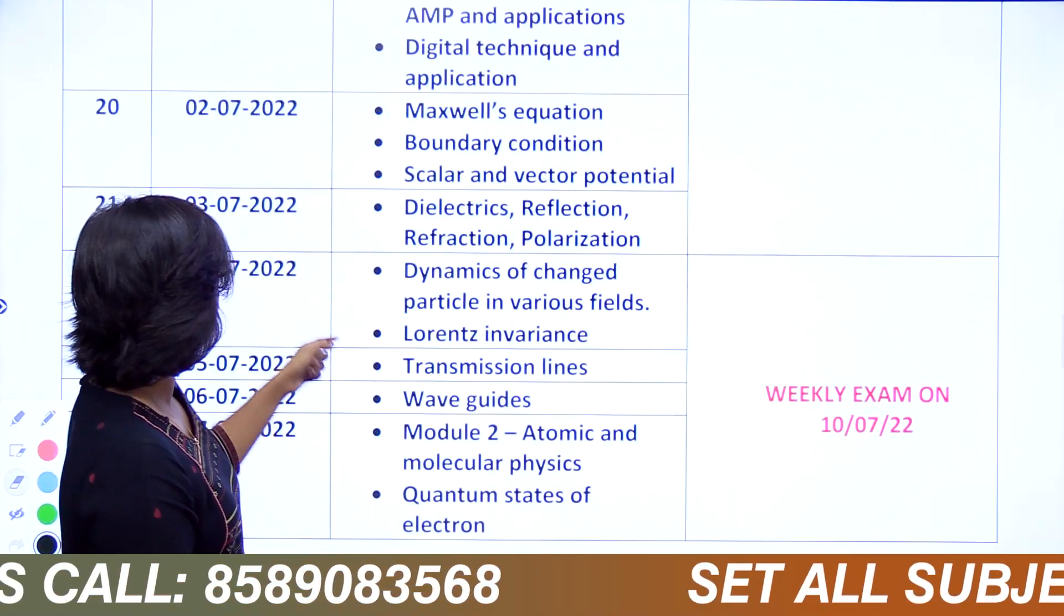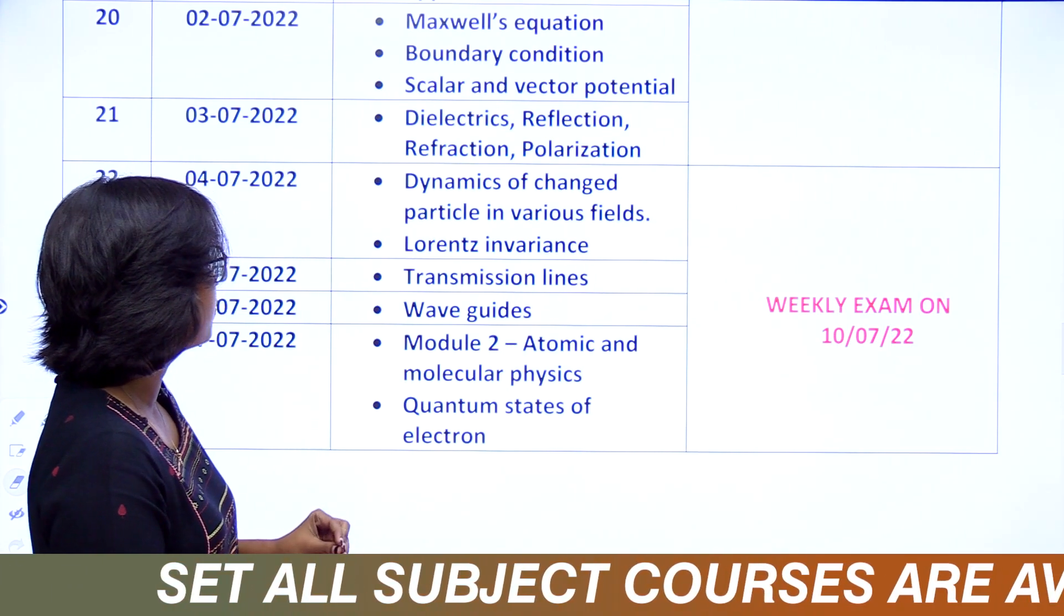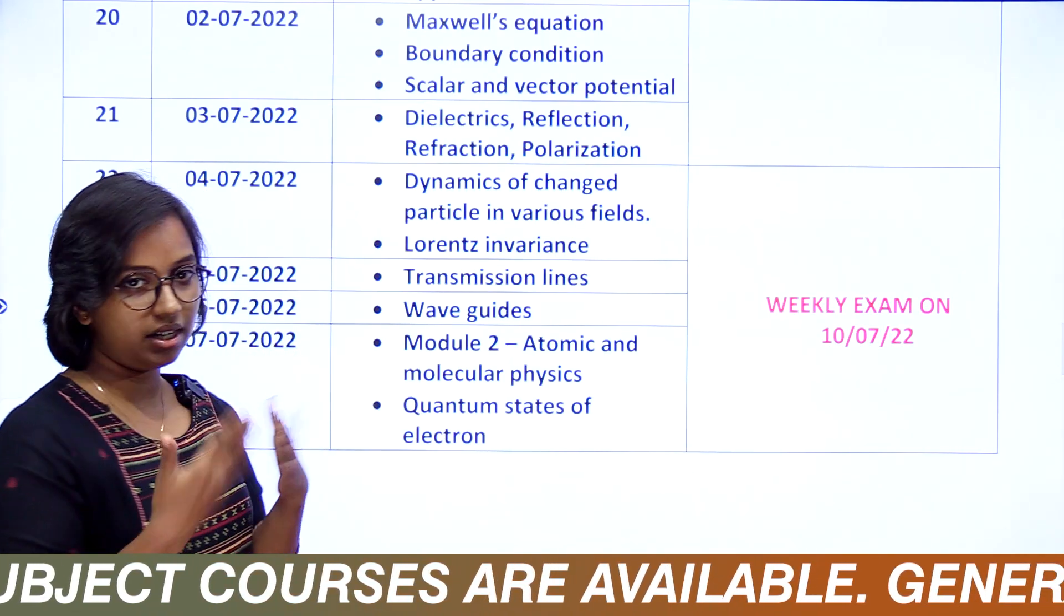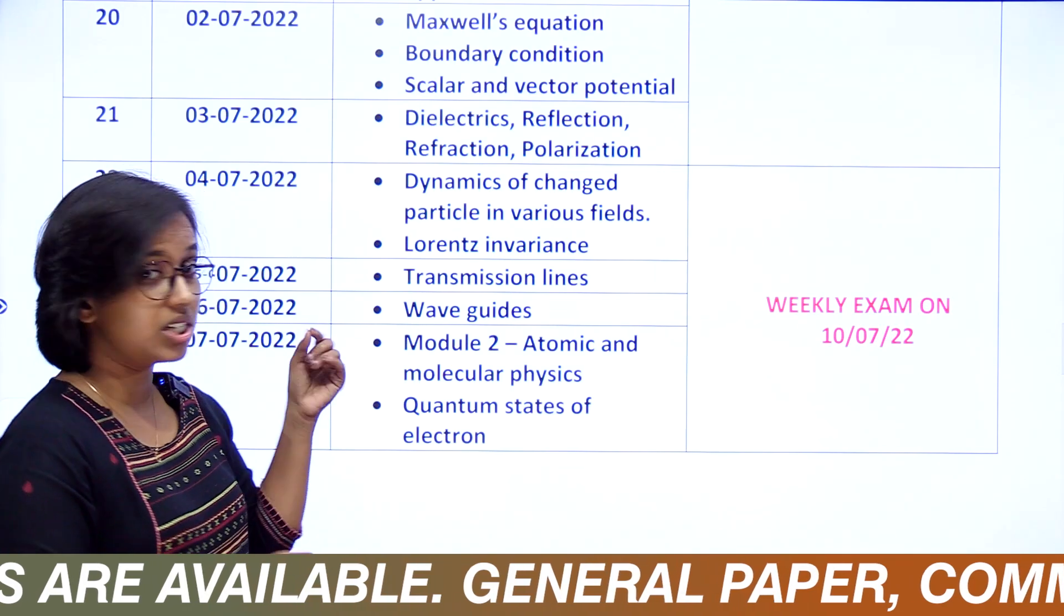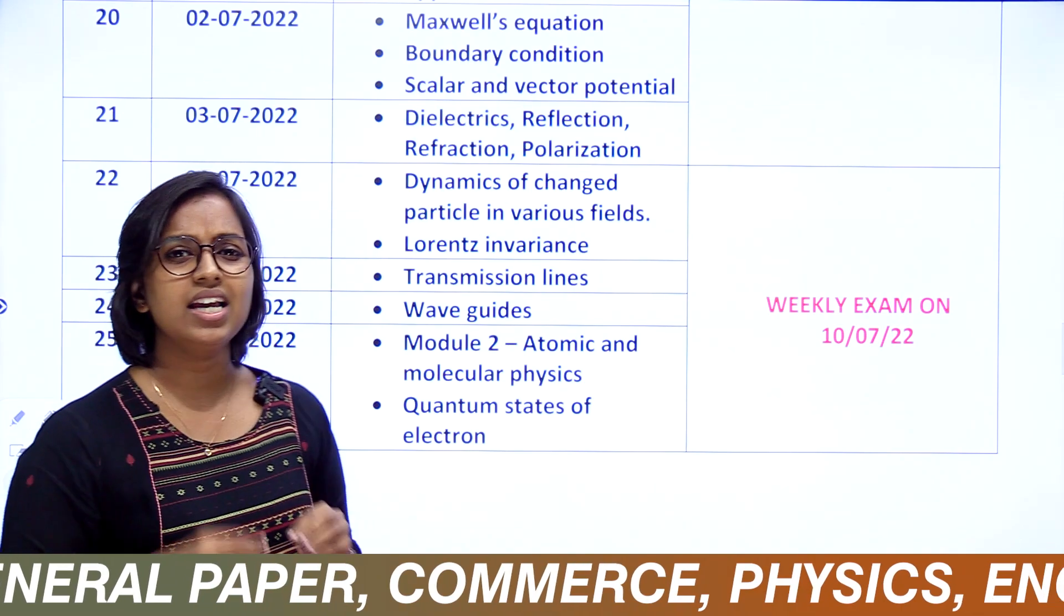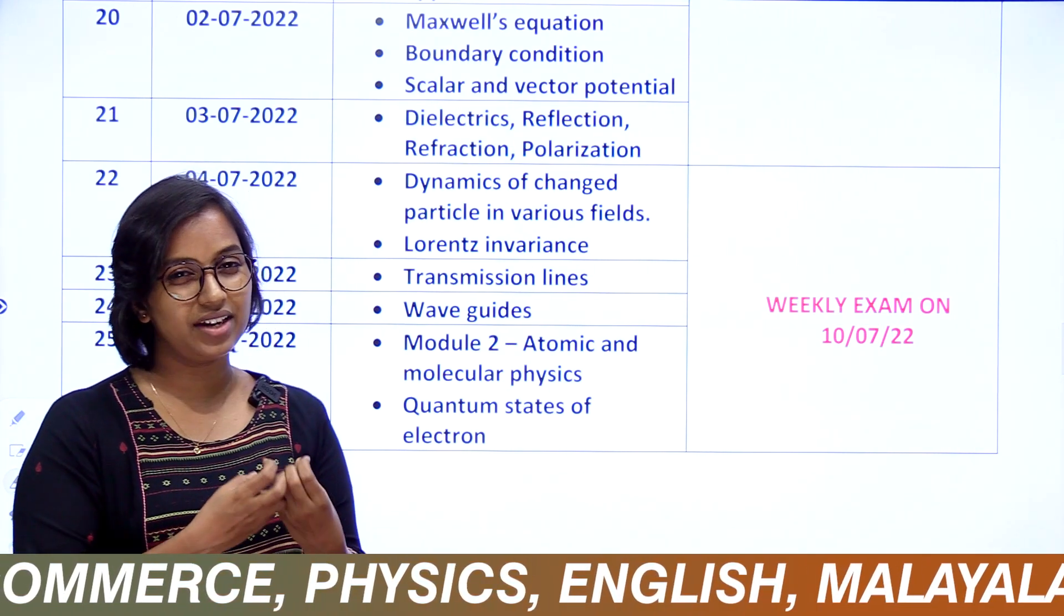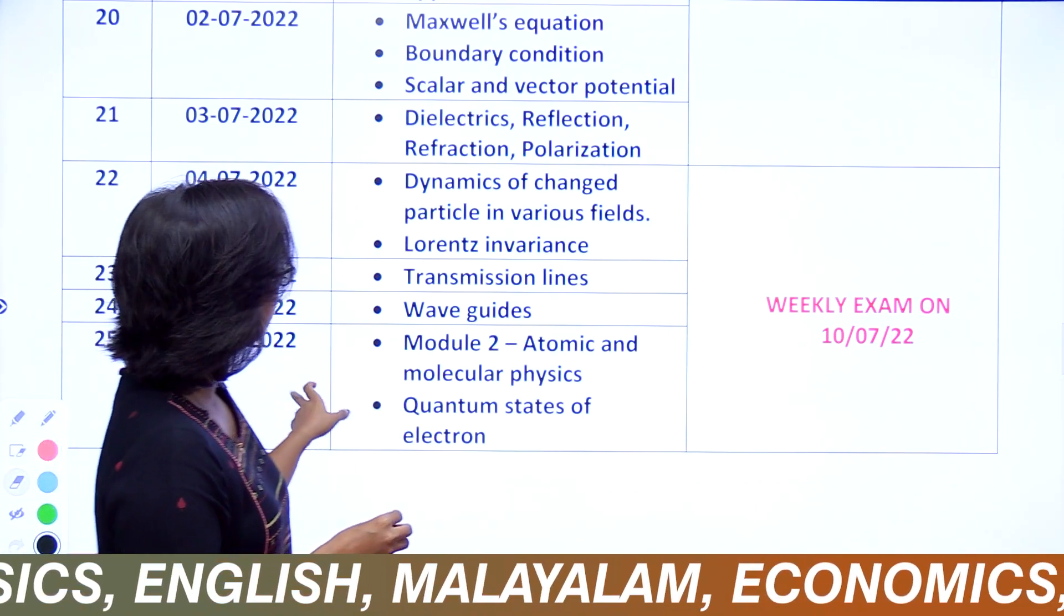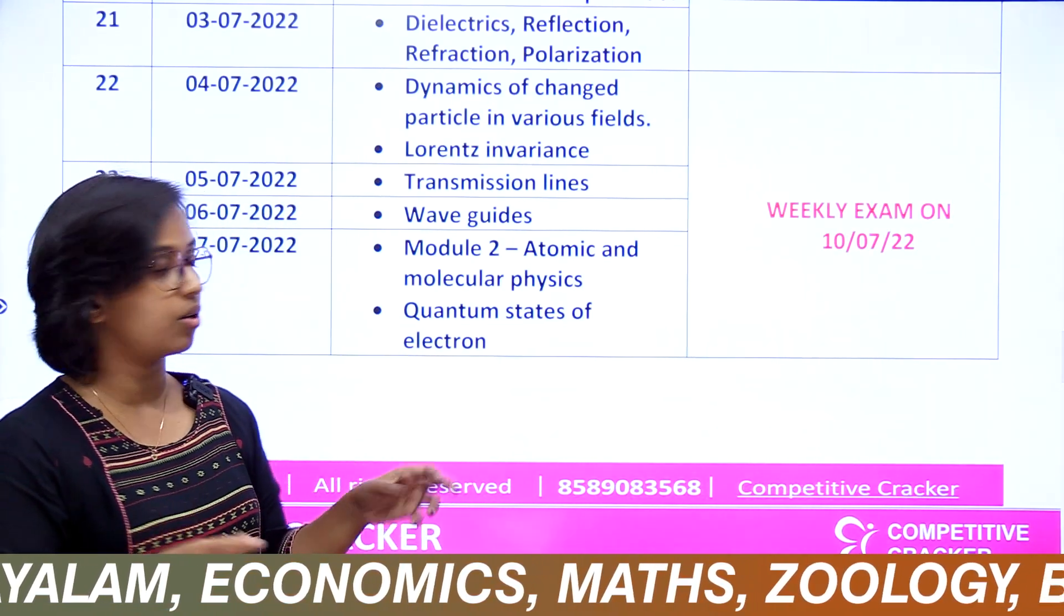On the 4th, Dynamics of Charged Particle in Various Fields and Lorentz Invariance - electrodynamic portions. Then 5th is Transmission Lines. 6th is Wave Guides - it may seem tough but it is very easy. Then 7th is Module 2, Atomic and Molecular Physics, and Quantum States of Electrons.